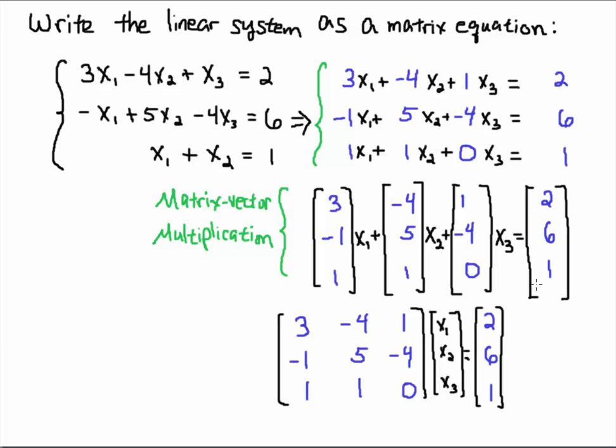That is equal to the right-hand side 2, 6, 1, and now you have a system: this is the matrix A, this is the vector x, and this is the right-hand side B. And if you don't like this perspective here, from this step to this step, I encourage you to think about this...